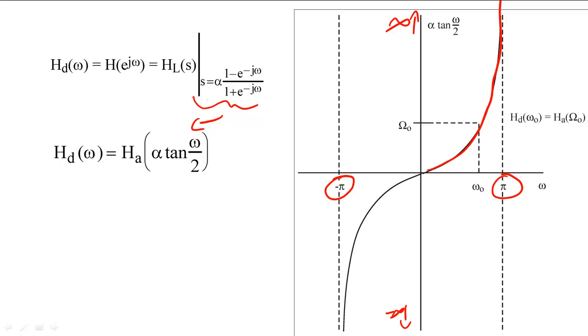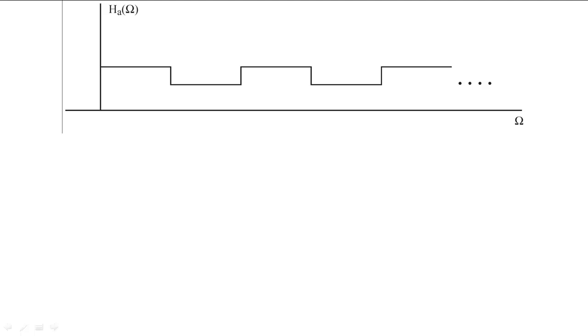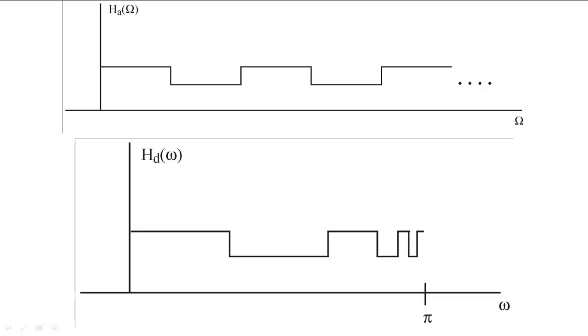For example, suppose that we had a prototype filter whose frequency response looked like this. The digital frequency response would have the same general shape, but the higher frequency steps would get progressively narrower.